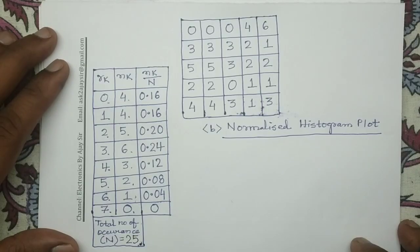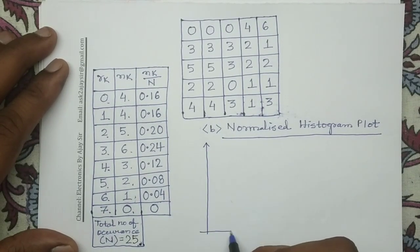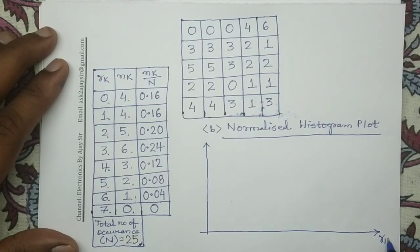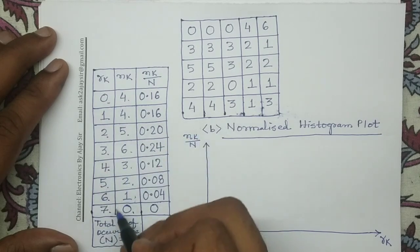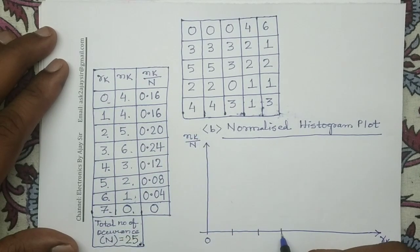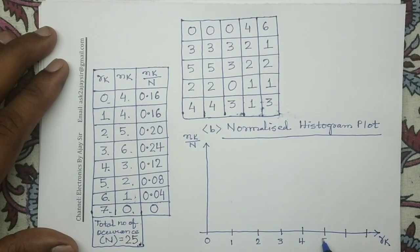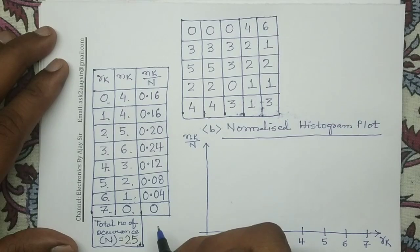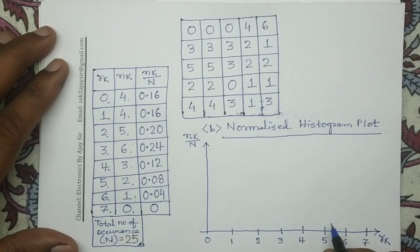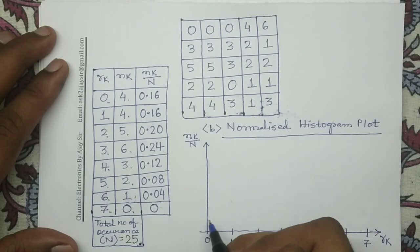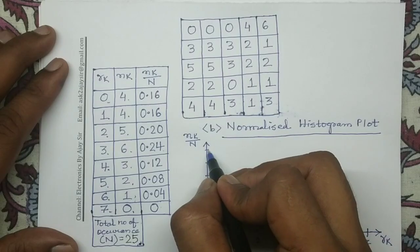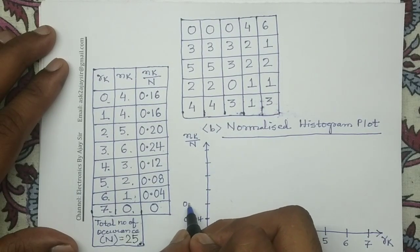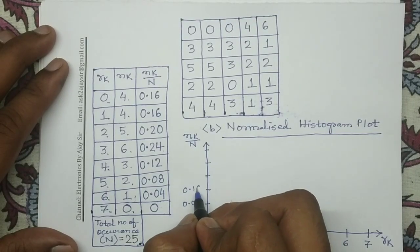Next we will plot the normalized histogram. Along the x-axis we will vary RK and along the y-axis we will vary the probability of occurrence, that is nK by n. RK varies from 0 to 7: 0, 1, 2, 3, 4, 5, 6, 7. The probability of occurrence varies from 0 to 0.24, with step size 0.04: 0.04, 0.08, 0.12, 0.16, 0.20, 0.24.